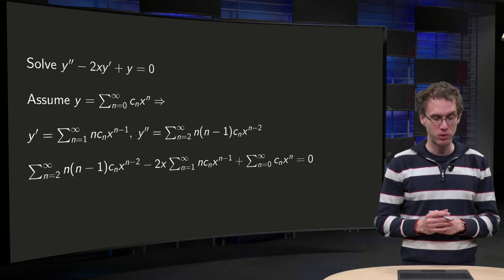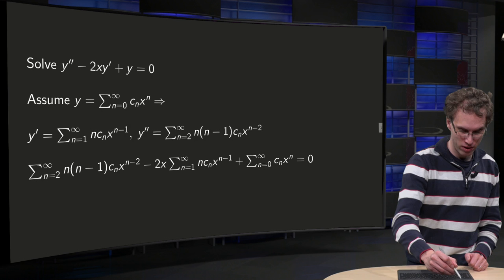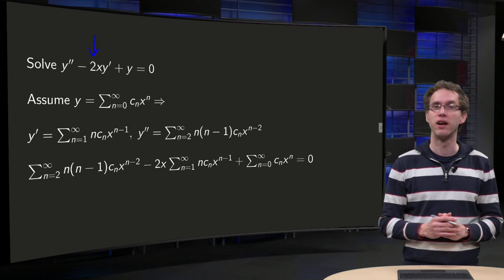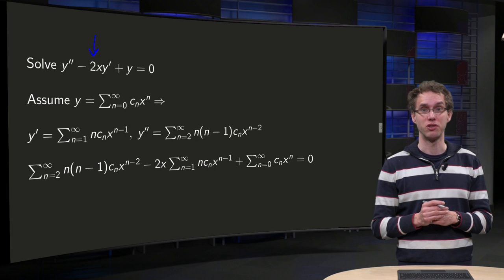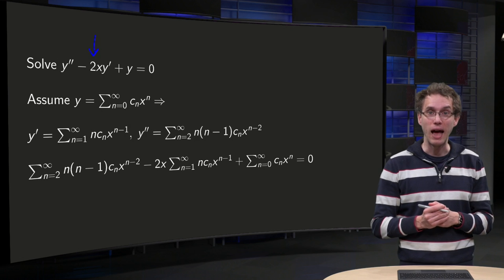Here we have y'' - 2xy' + y = 0. We have an x over there, so we do not have constant coefficients, so we have to think of something else.